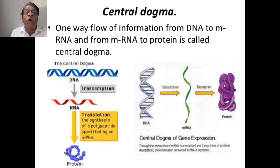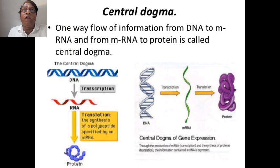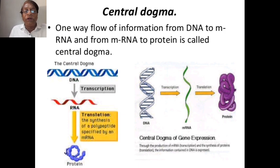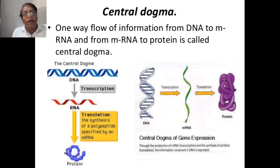The central dogma. We have already studied the central dogma at the time of studying the structure of DNA — Watson and Crick DNA. The central dogma states that genetic information always flows from DNA to mRNA, and from mRNA to protein.